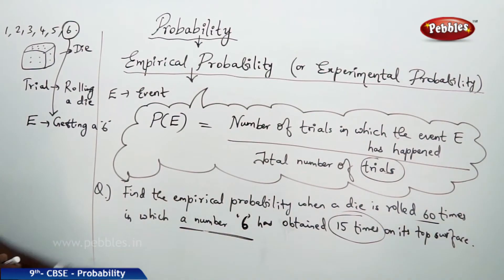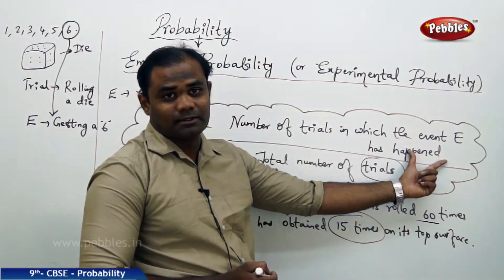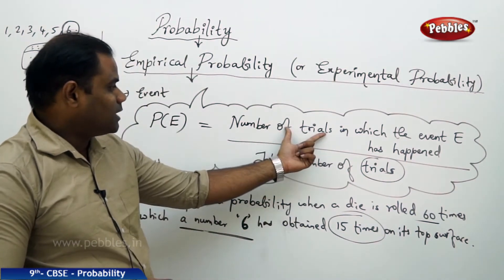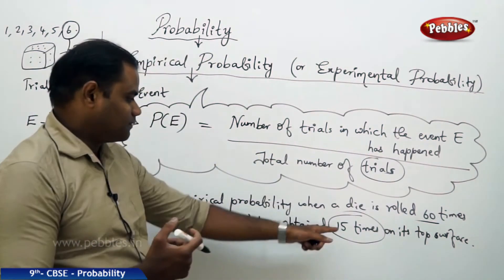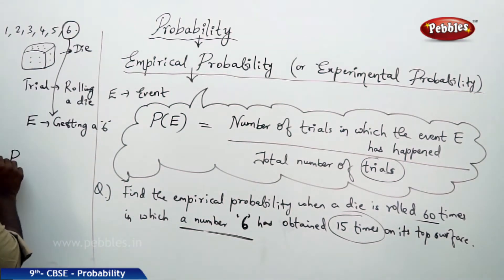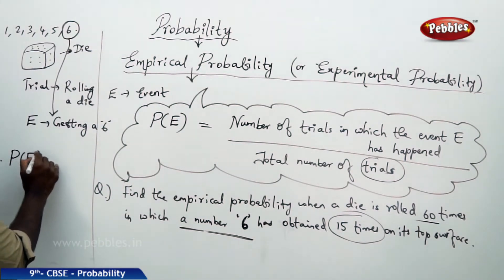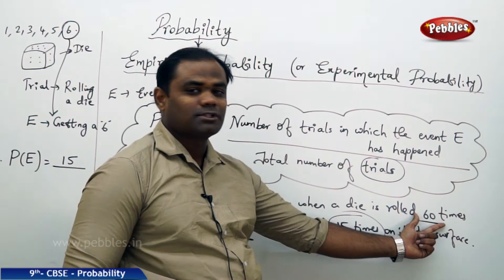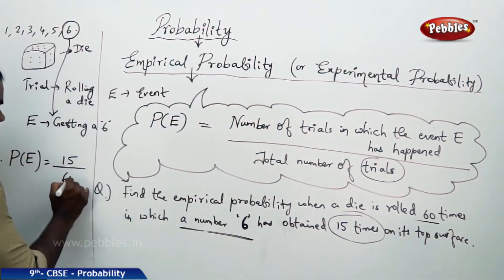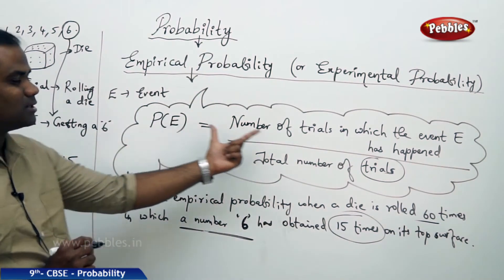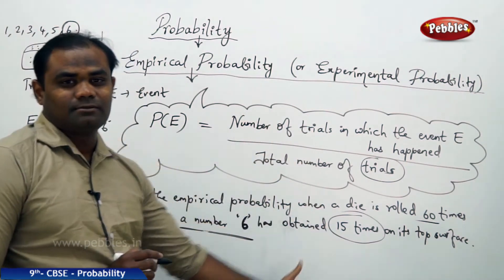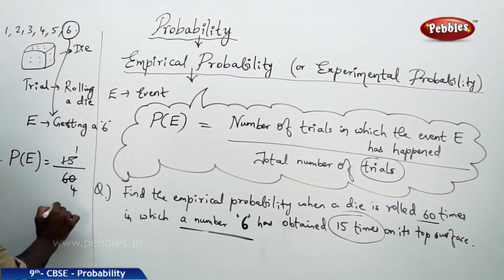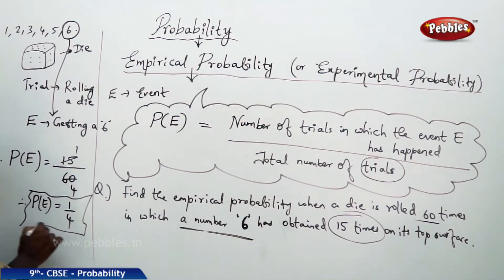Therefore I have the number of trials in which the event E has happened — that is the number of times the die is rolled in which I got a number 6 on the top surface — is 15. Therefore my empirical probability is 15 over the total number of trials, which is 60, giving me 1 by 4. Therefore my empirical probability of getting a 6 on the top surface is 1 by 4.